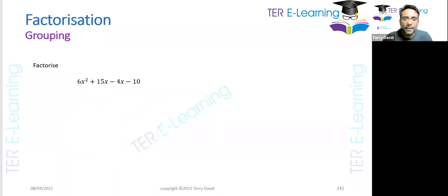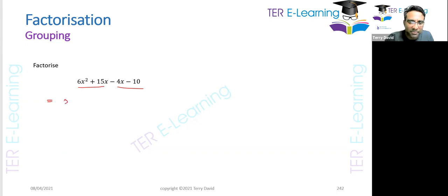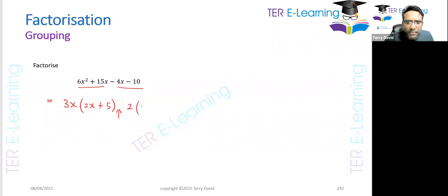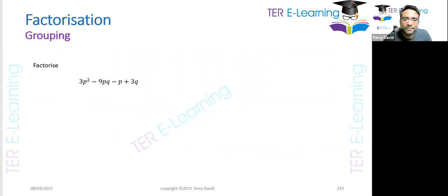Next: 6x² + 15x − 4x − 10. From the first two terms, the HCF of 6 and 15 is 3, and x is common, giving 3x(2x + 5). From the last two terms, the only common factor is 2, giving 2(2x + 5). The brackets match, and we need a minus sign between the groups, so the answer is (2x + 5)(3x − 2).